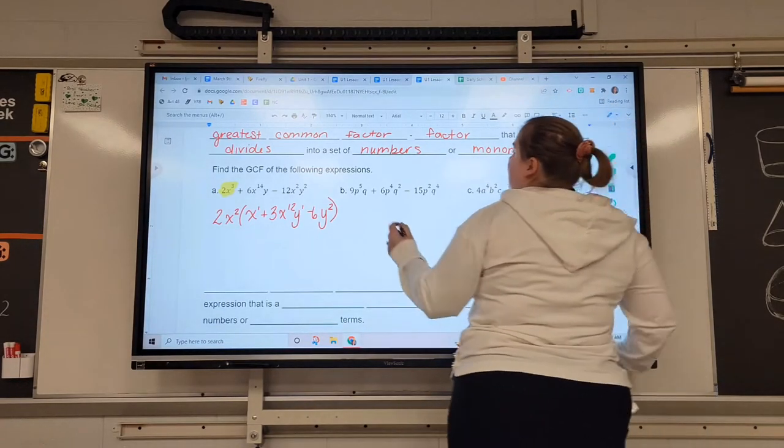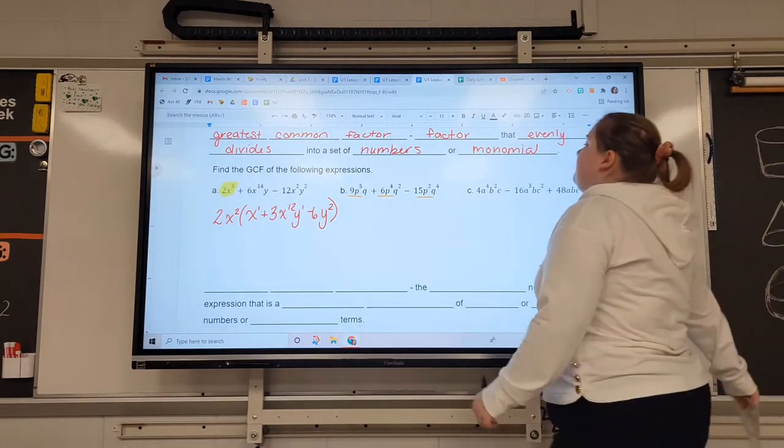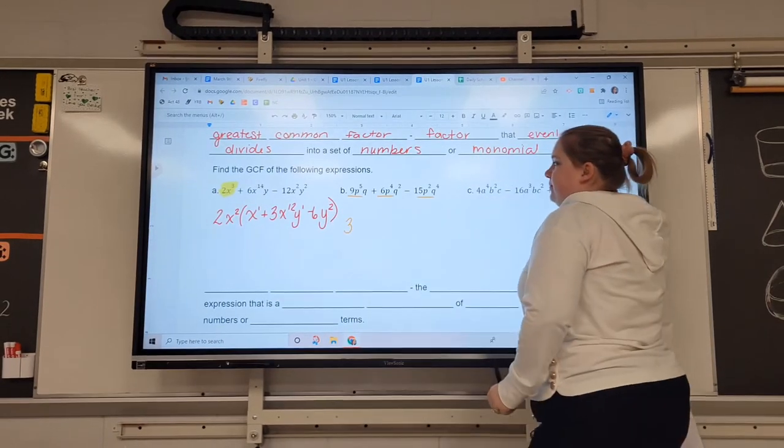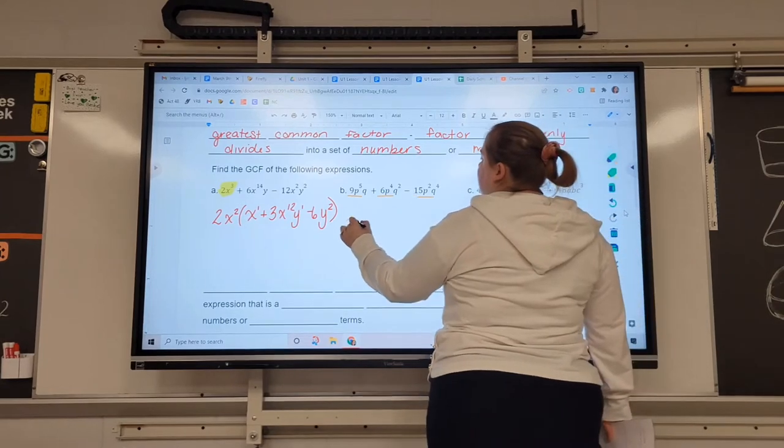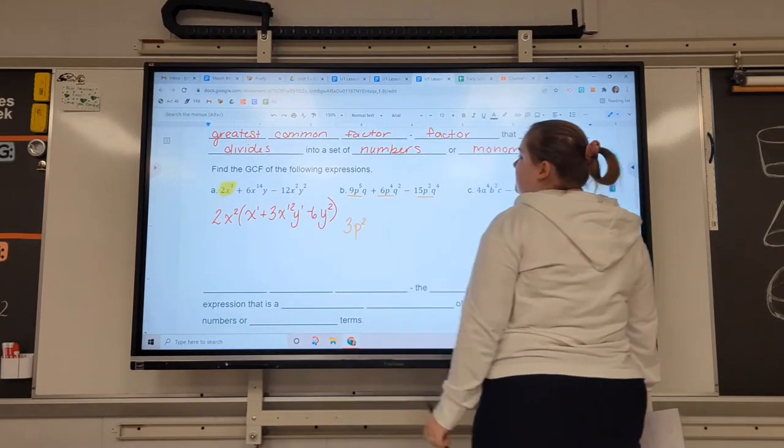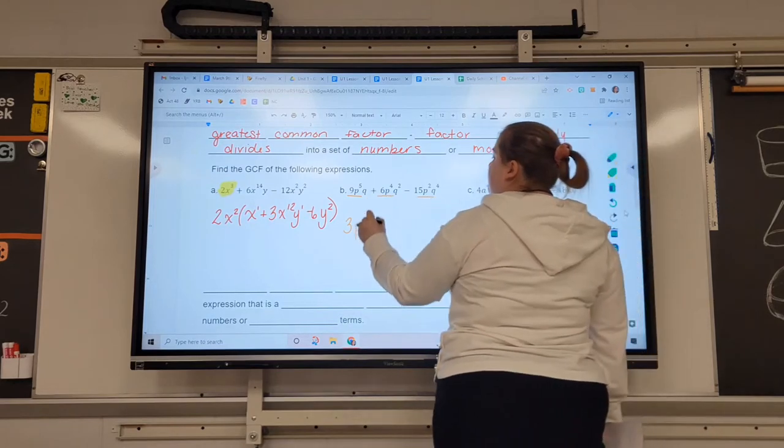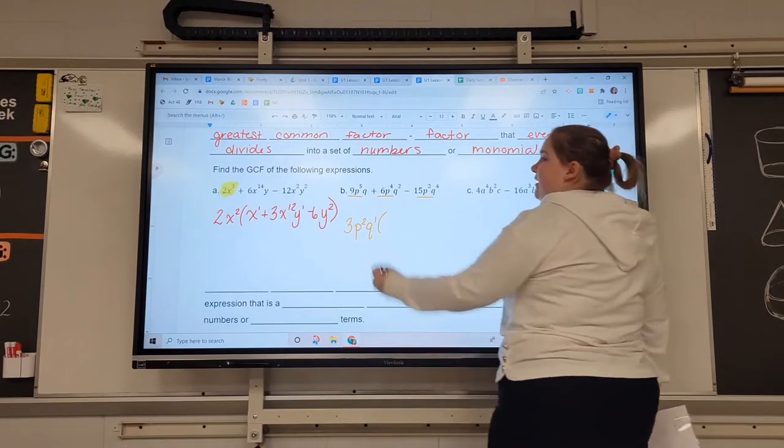So, for our second example here, we have these three pieces. And the most that you can take from each one, all three of these numbers can be divided by three. There's five p's, four p's, and two p's. So the most that they could give up is two. One q, two q, and four q. The most that they could give up is one. And now we need to figure out what's left behind.